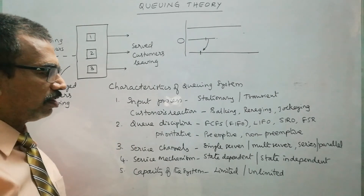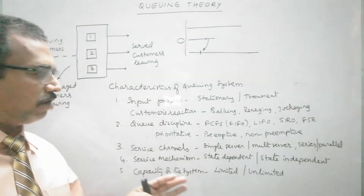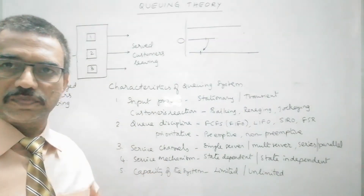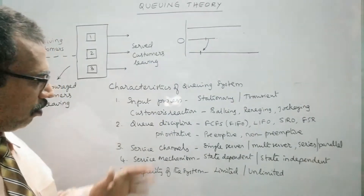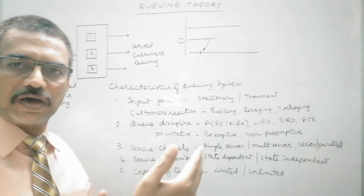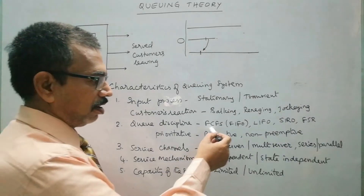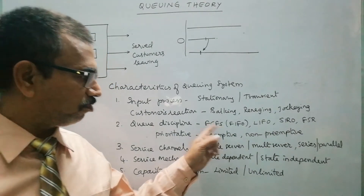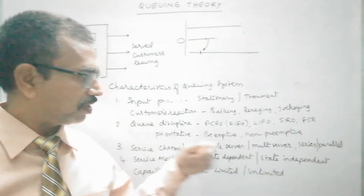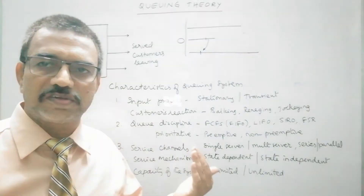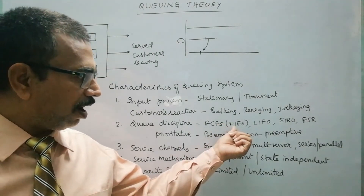Next, coming to the second characteristic: queue discipline. Queue discipline means when customers arrive into a queuing system and follow some probability distribution, the way in which customers are provided service — the way in which customers are selected to receive service — matters. One type is FCFS, meaning first come, first served. Whoever enters the system first will be taken first for service, and so on in order. This is also called first in, first out.